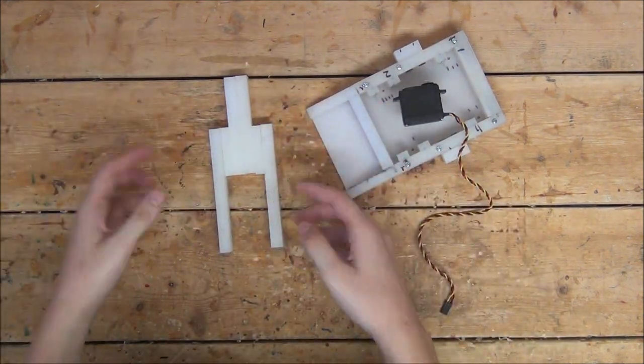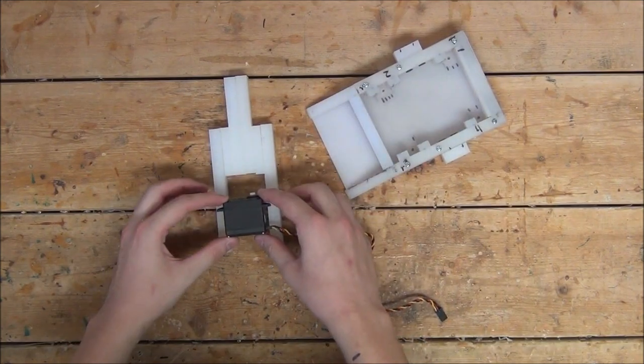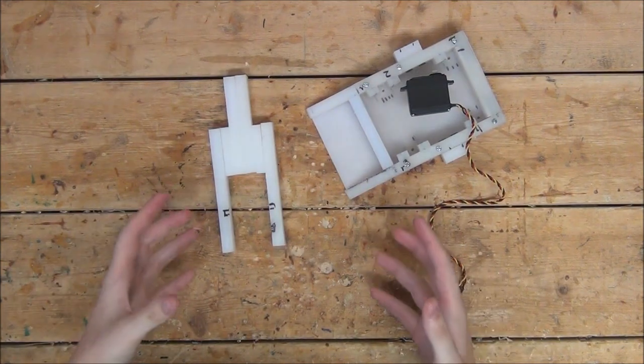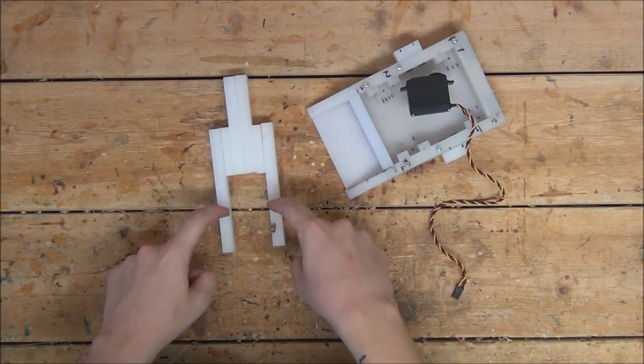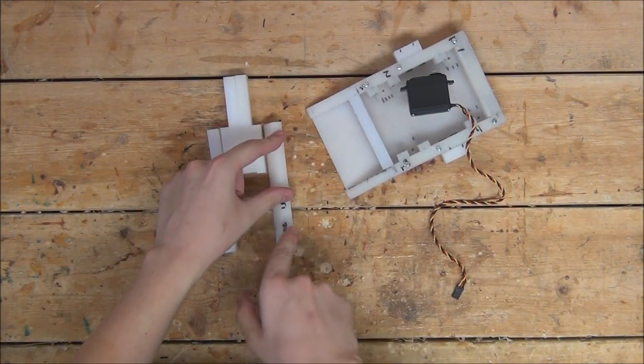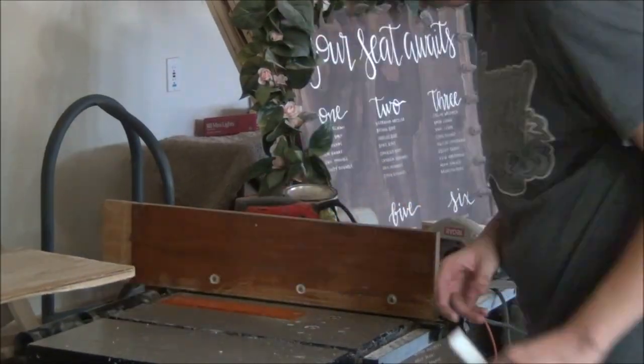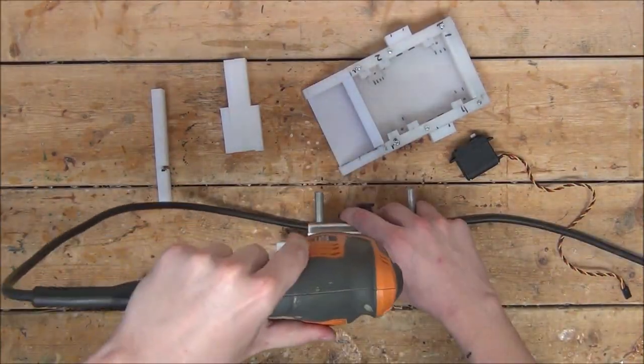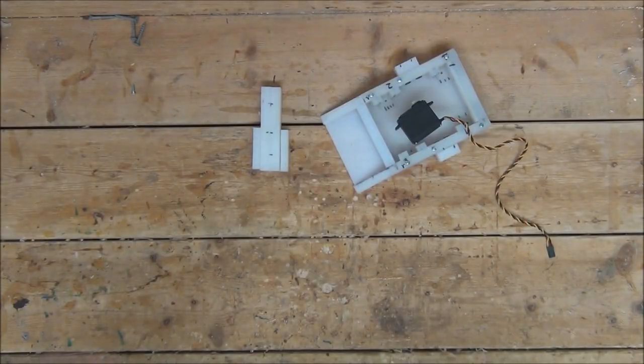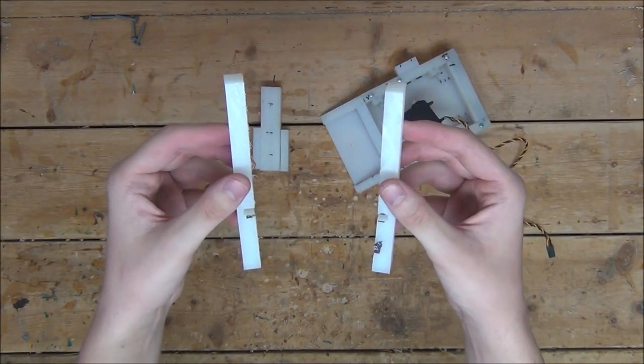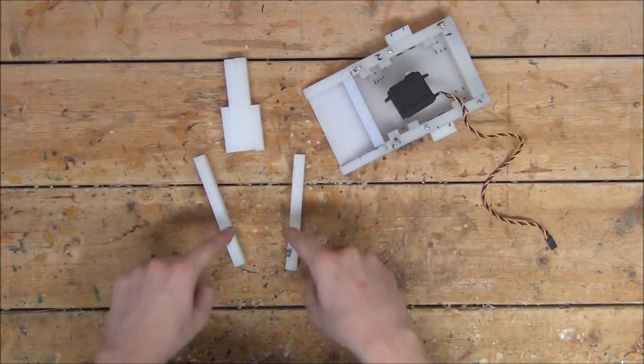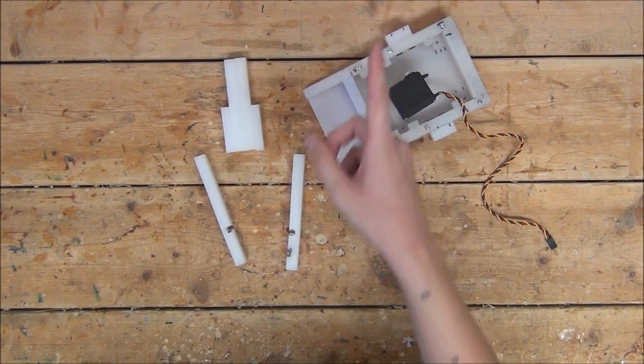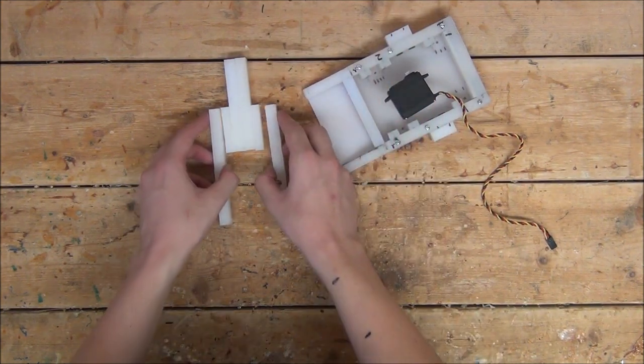But before we bolt this together, I'm first going to place my servo a half-inch up from the bottom and mark where the wings and cables sit. I'll then cut a shallow channel for the wings to slide into and drill a small hole for the cable to fit through. Beautiful, just like these. Now you're probably wondering, don't these channels compromise strength? Yes, they do, but only temporarily. We'll get back to that in a minute, but for now, let's go ahead and bolt everything together.